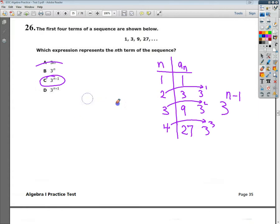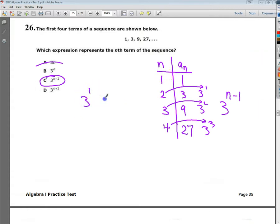I'm going to try the second one now. 3 to the n. So when I plug in 1, I should get a value of 1. So 3 to the first power is 3. So, no, that one's out.